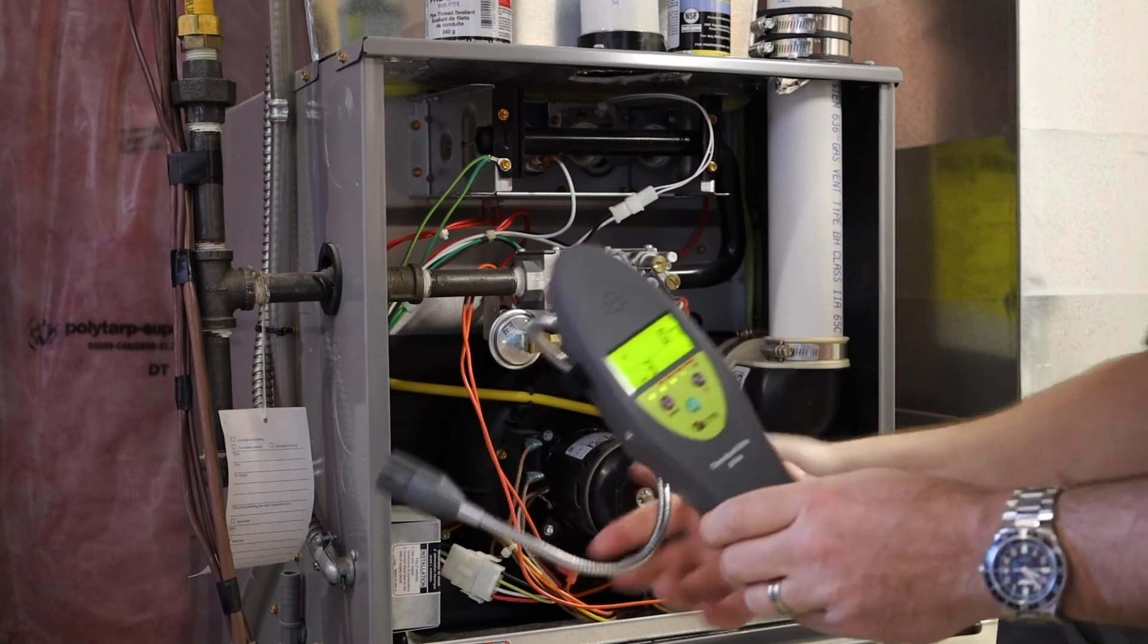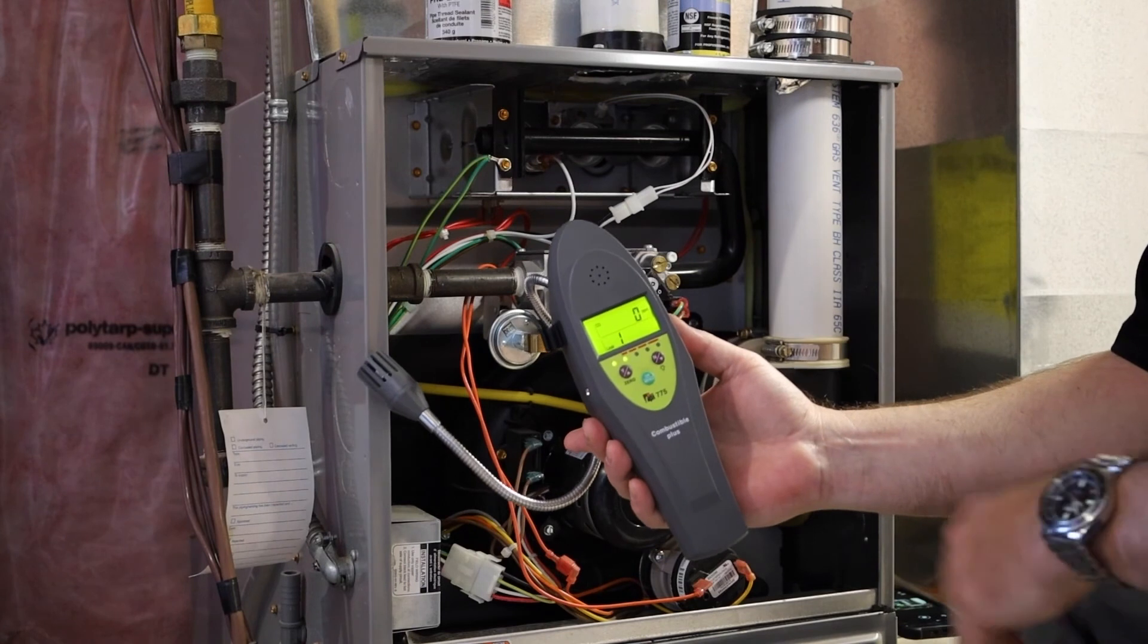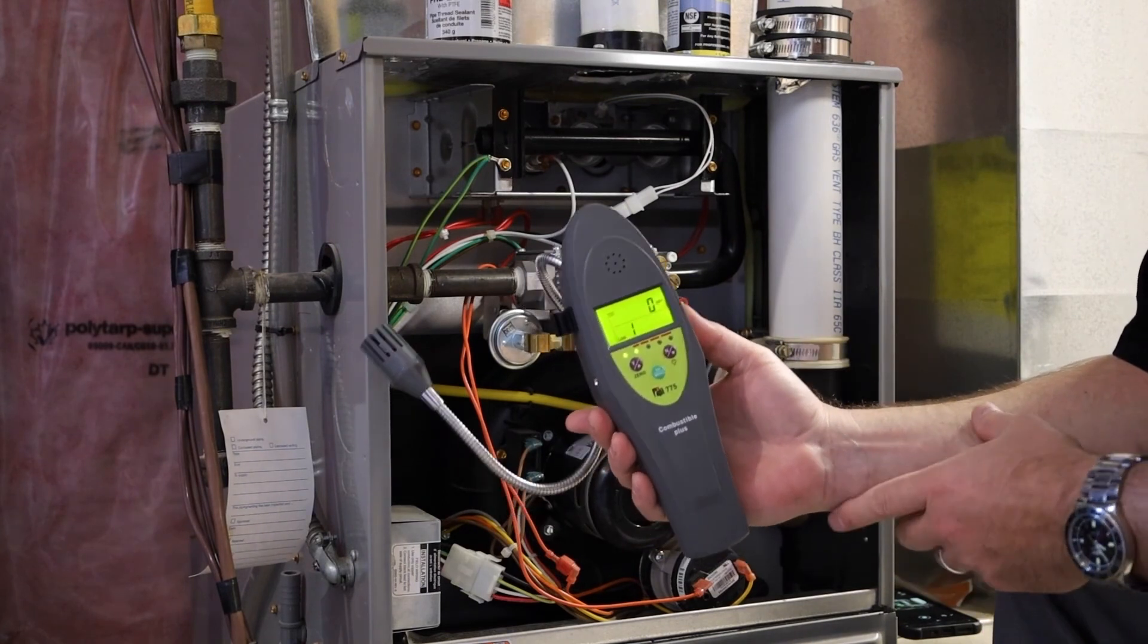So the 775, you're killing two birds with one stone. You're measuring a combustible gas leak detector, and it's never a bad thing to measure CO.